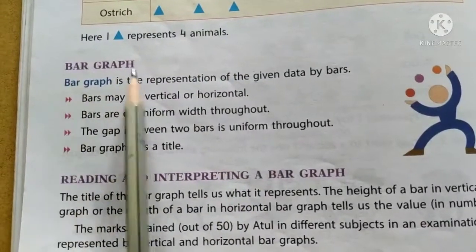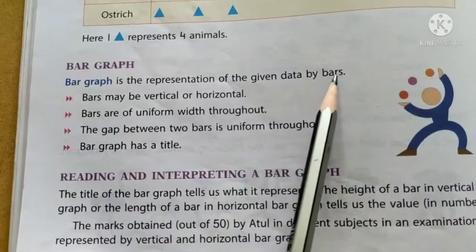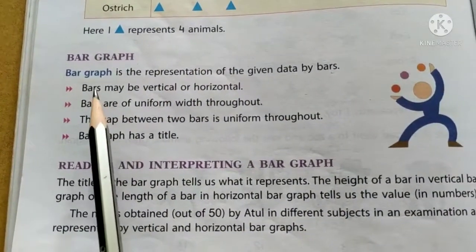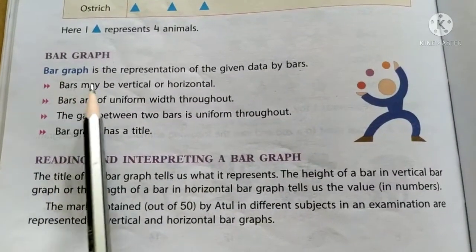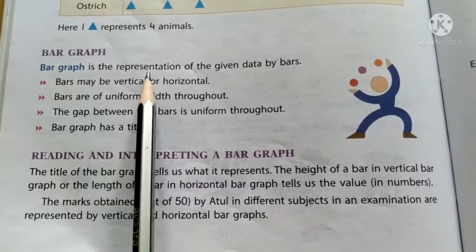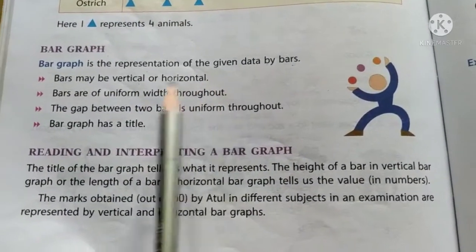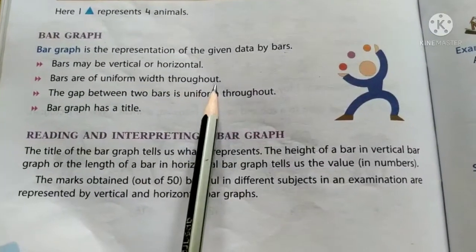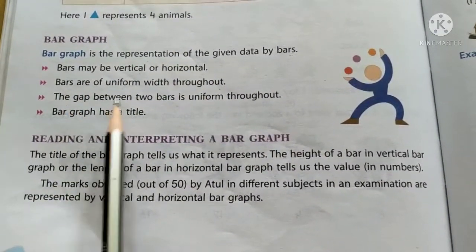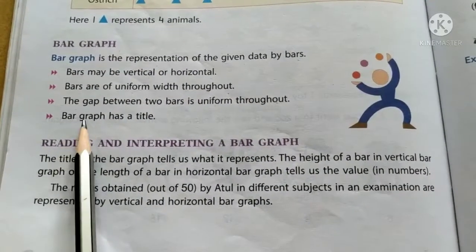Now let us understand bar graphs. A bar graph is the representation of given data by bars. Children, we need to remember certain points about the bar graph. Bars may be vertical, that is top to bottom, or horizontal, that is left to right. Bars are of uniform width throughout. The gap between two bars is uniform throughout. A bar graph has a title.